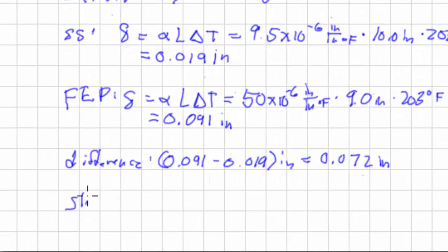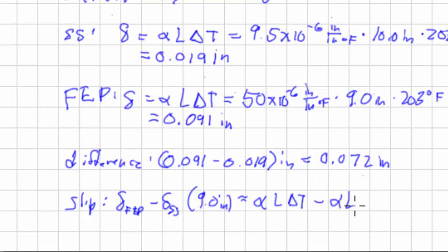So let's go back and do that. So in terms of slip, it's change of FEP minus change of stainless steel all for 9 inches. That is alpha L delta T of the FEP minus alpha L delta T of the steel. And the neat thing about that is that the only difference between those two is alpha. L is the same, delta T is the same, because we have length of 9, we got a change in temperature of 203.